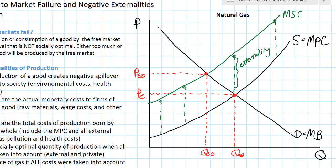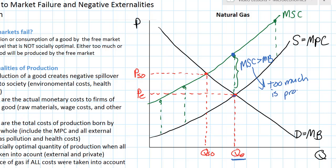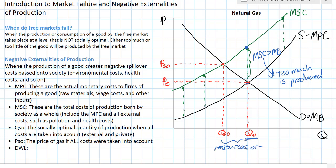The free market will produce QE units of natural gas. What makes this an inefficient level of production? At that quantity, the cost to society — reading up to the marginal social cost curve — is greater than the benefit that society is actually deriving from natural gas. So marginal social cost is greater than marginal benefit. A market is inefficient if marginal cost does not equal marginal benefit. While marginal private cost does equal marginal benefit at the equilibrium point, the social cost — taking into account environmental and health effects — exceeds the marginal benefit, meaning too much gas is being produced.